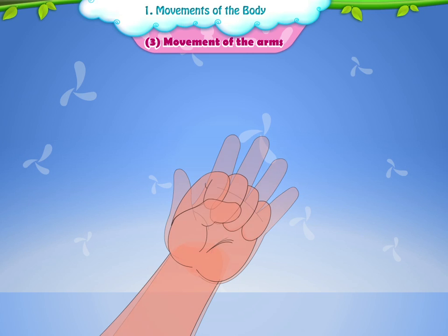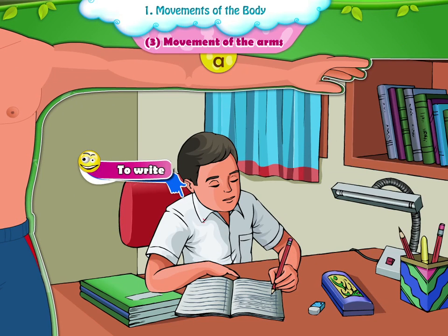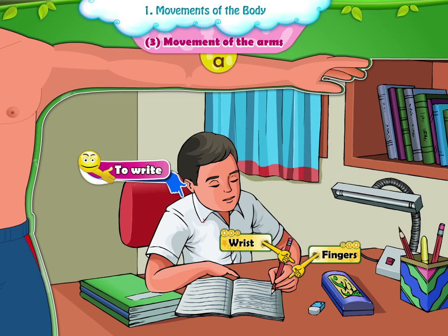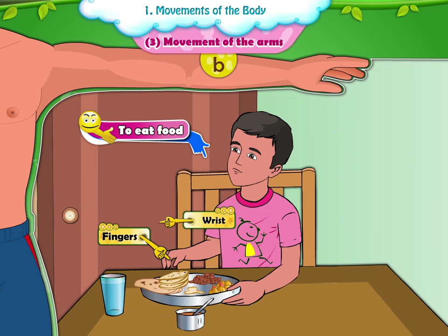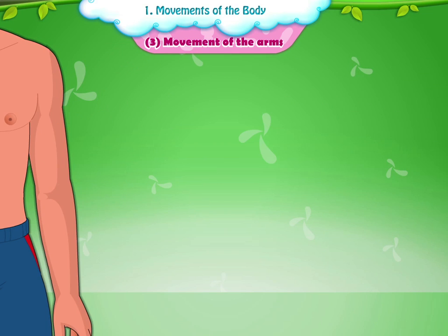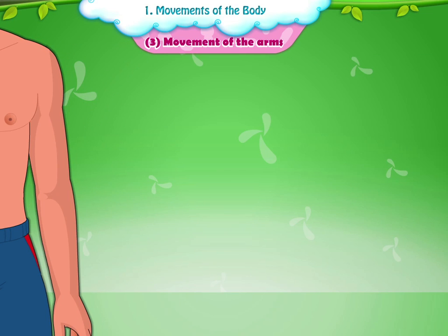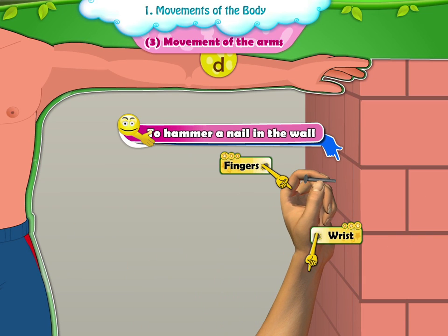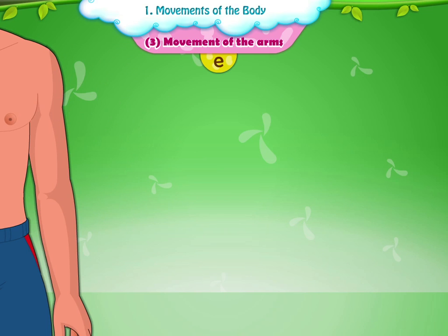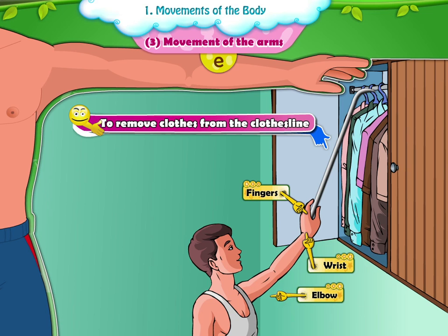Let us look at the different movements of our hands. A) To write, we use our fingers and wrist. B) To eat food, we use our fingers, wrist and elbow. C) To draw Rangoli designs, we use our fingers. D) To hammer a nail in the wall, we use our fingers, wrist and elbow. E) To remove clothes from the clothesline with the help of a stick, we use our fingers, wrist, elbow and shoulders.